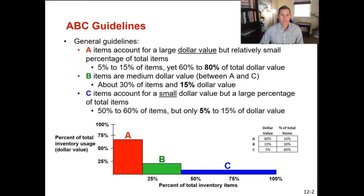C items account for a small dollar value but are a large percentage of total items — maybe fifty to sixty percent of your total items, but only five to fifteen percent of the total dollar value. So when we do our analysis, A items are few but expensive, while C items are numerous but their total dollar value is only five to fifteen percent.